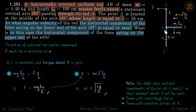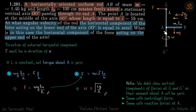We chose torque about point A because vertical force components at O and O', the centrifugal force, and the reaction forces holding rod AB horizontally all pass through A — so none contribute to the torque about A. This makes balancing torques about A very convenient.